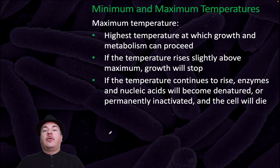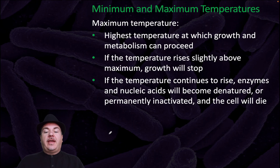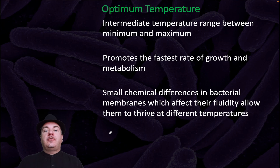If the temperature rises slightly above maximum, growth will stop. If the temperature continues to rise, enzymes and nucleic acid will become denatured, or permanently inactivated, and the cell will die. Optimum temperature is an intermediate temperature range between minimum and maximum, and it promotes the fastest rate of growth and metabolism.